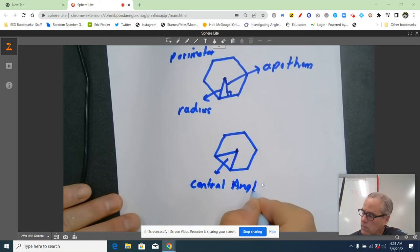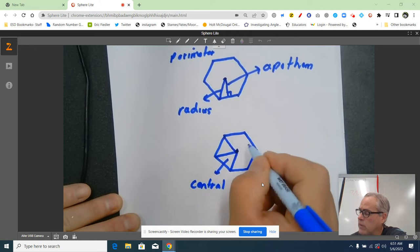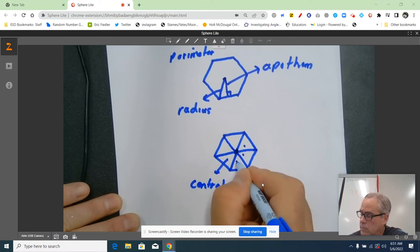And if I were talking about a hexagon in particular, if I drew all the central angles for a hexagon, take a look at how many I have: one, two, three, four, five, six. It's the same as the number of sides.